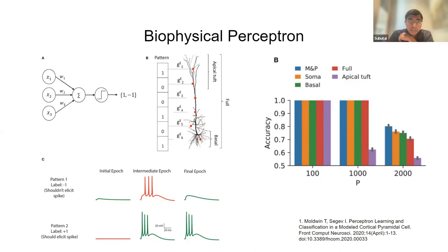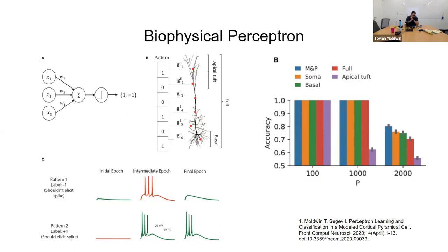An audience member asked whether there was clustering or whether inputs were randomly assigned to synapses throughout the dendritic arbor. The synapses were distributed uniformly. We were interested in different regions of the dendrite because the apical and basal regions receive inputs from different brain regions. We tested putting all 1000 synapses just on the apical tuft or just on the basal tree, but there was no explicit clustering within those regions — it was uniform distribution.